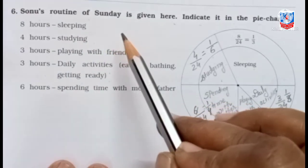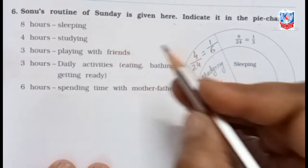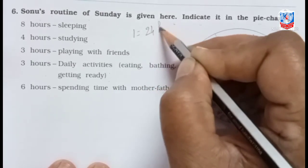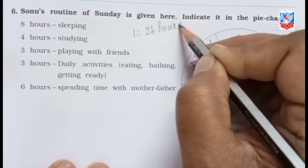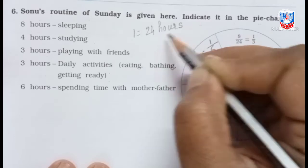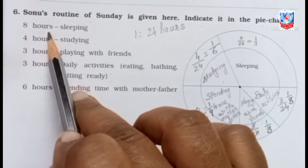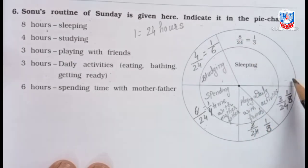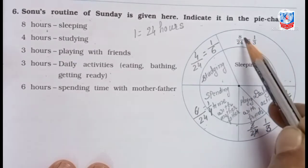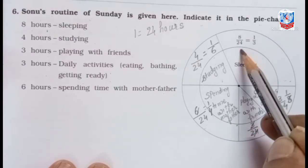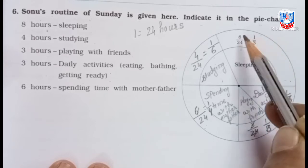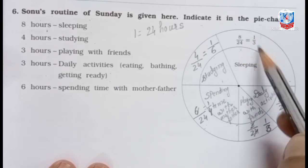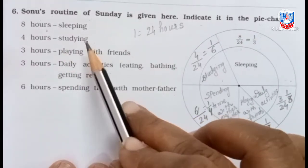One day is equal to 24 hours. So out of 24 hours he sleeps 8 hours. This portion is for sleeping: 8 by 24, that is 1 by 3. 8 ones are 8 and 8 threes are 24.